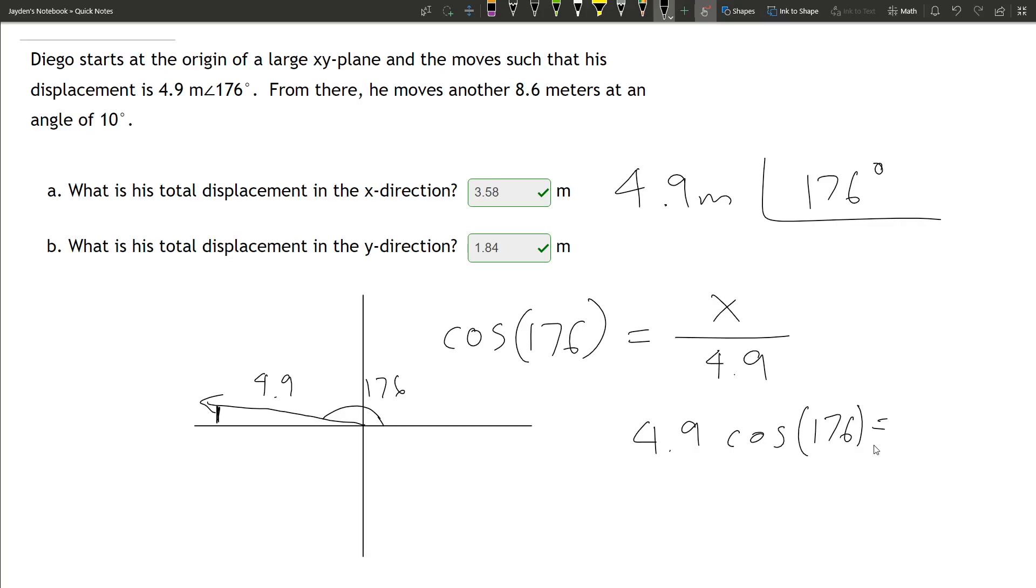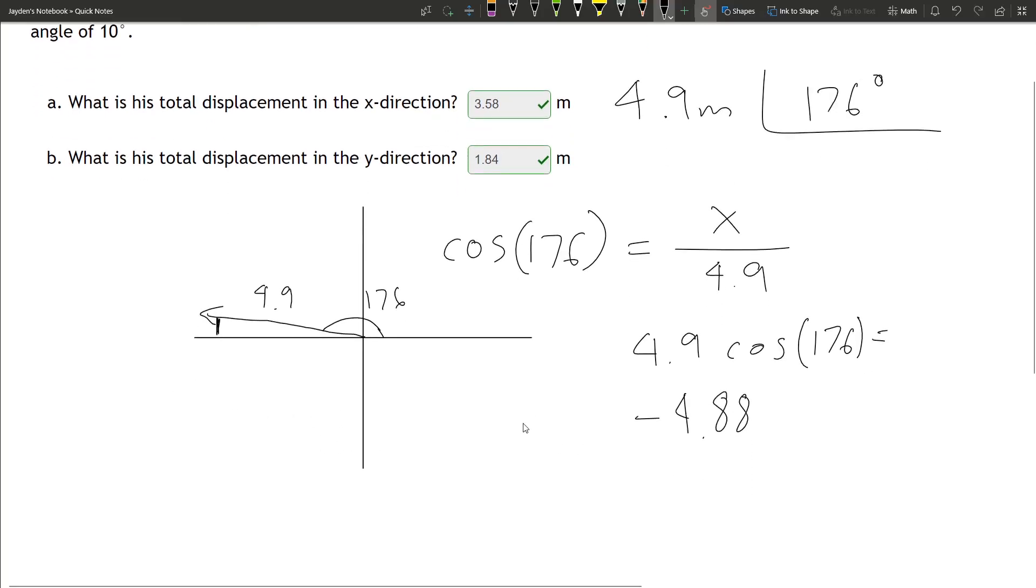Let me get my calculator out. If you plug it in, you should get 4.9 cosine 176 is negative 4.88, which is reasonable because we're going in the negative direction. The y is in the positive direction. Let's denote this as i because it's a 2D vector.